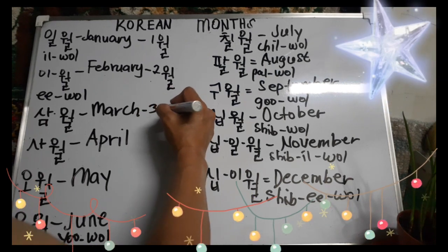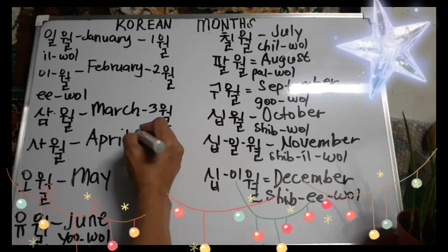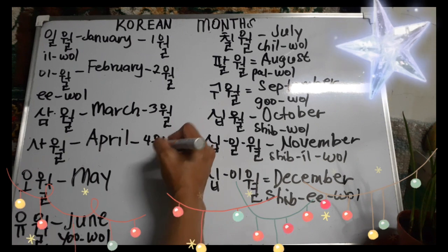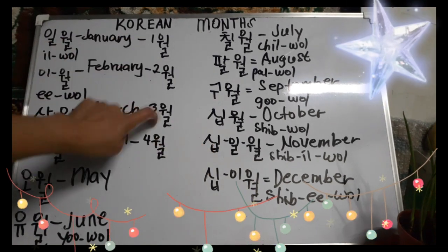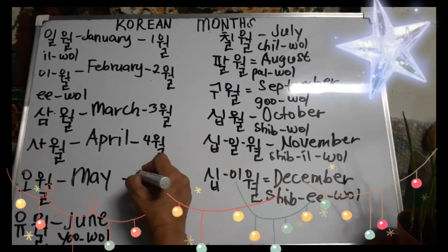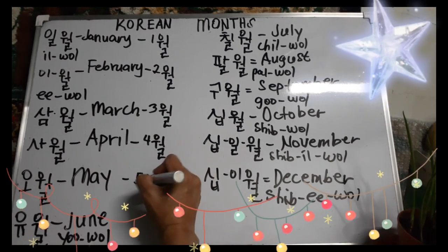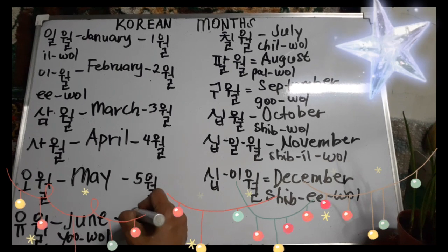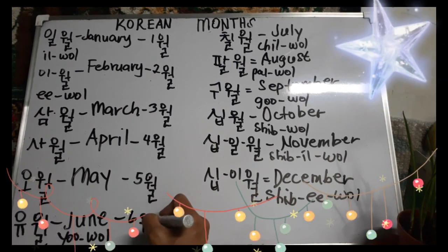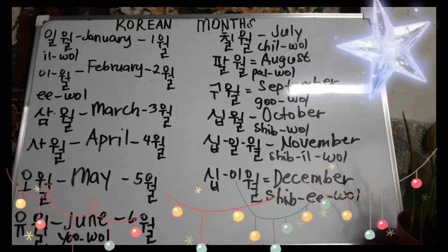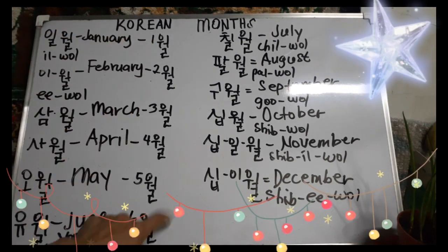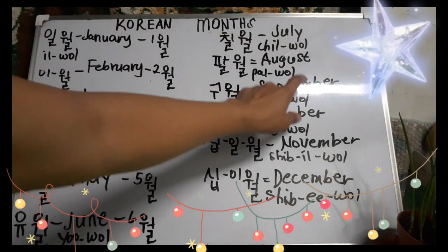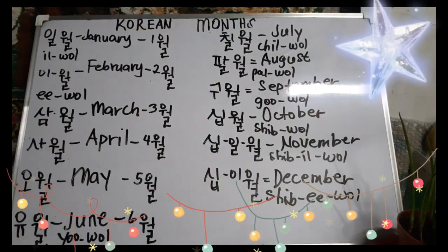Okay, so ganyan pa rin — January, February, March, April — ganyan. Kasi ang May — May 5 — so wall yan. Okay. Then 6 — June. So ganyan. Parang shortcut lang sila, class. So shortcut: January, February, March, April, May, June — ganun. Same lang dito, same pa rin dyan. Okay. So 7 — wall. Ganyan. 8 — wall. Ganun. Okay.